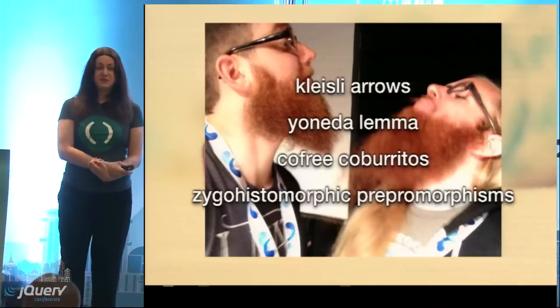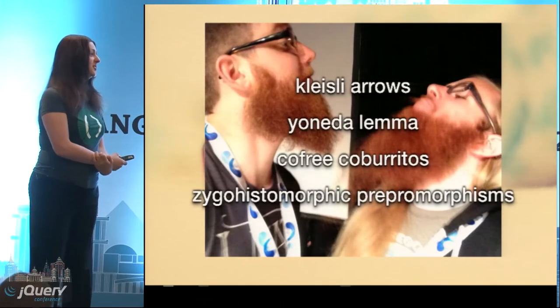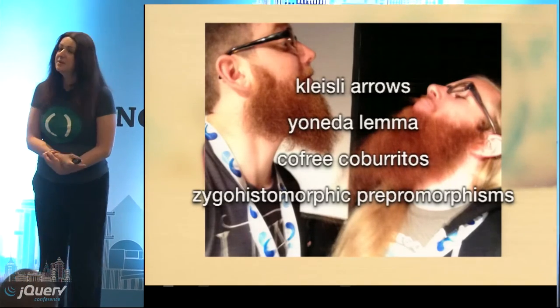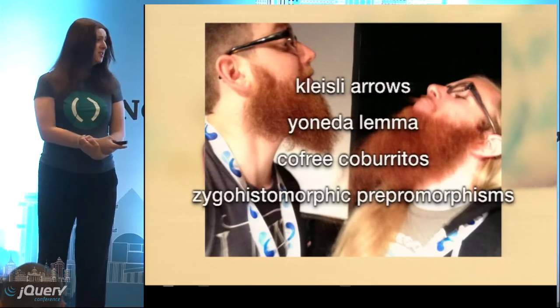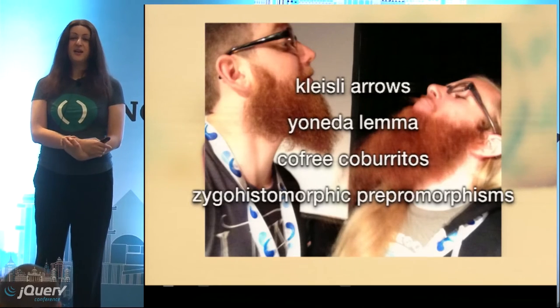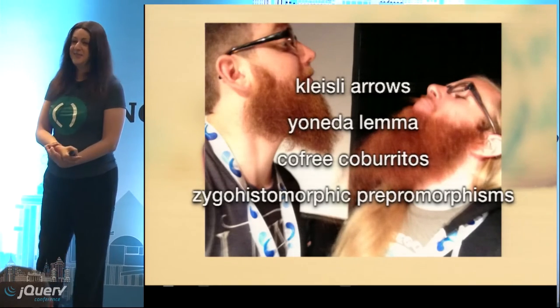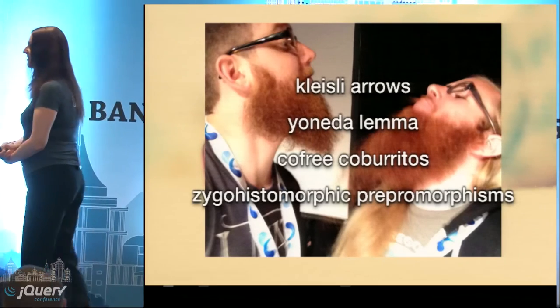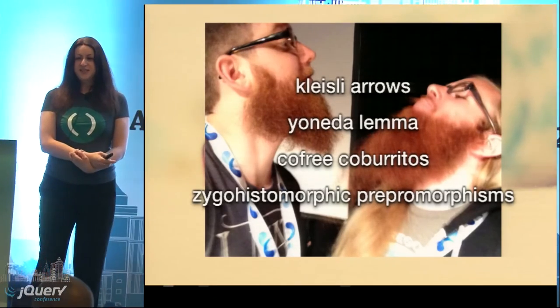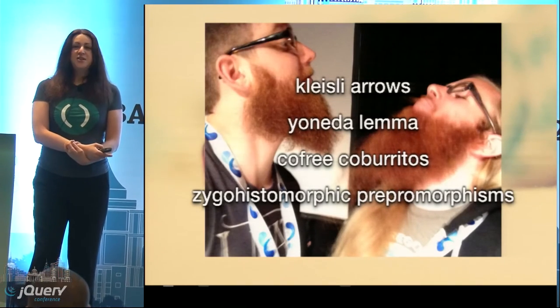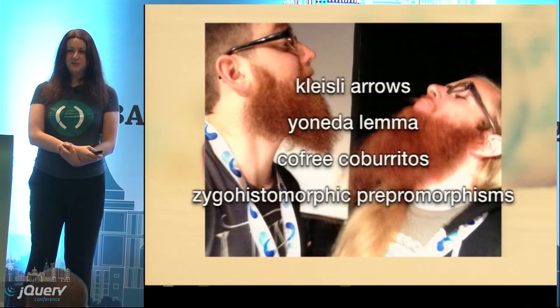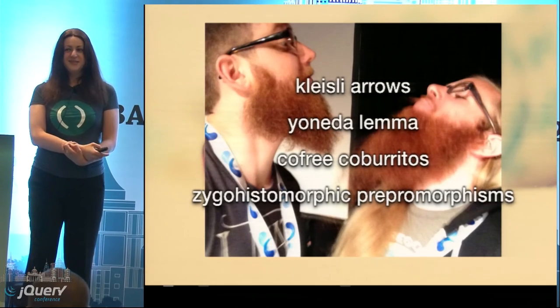Because in functional programming, you have things like this vocabulary from mathematics, which is just amazing for confusing people. You've got the closely arrows, you've got the you-need dilemmas — I'm not sure what a you-need dilemma is, but apparently you need one. And psycho-histomorphic pre-promorphisms. That's a real thing in Haskell. And there's nothing like a word like that — I hadn't practiced a lot to learn how to say psycho-histomorphic pre-promorphisms — to make other programmers feel like, what's going on? I have no idea what's happening here.